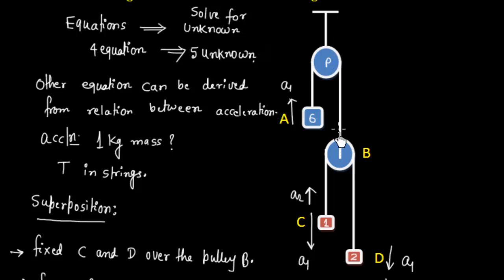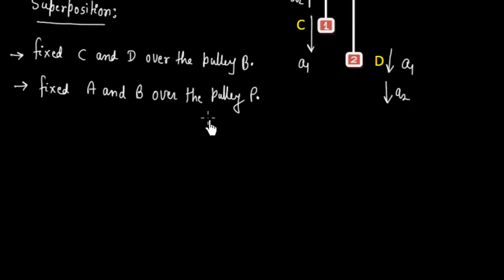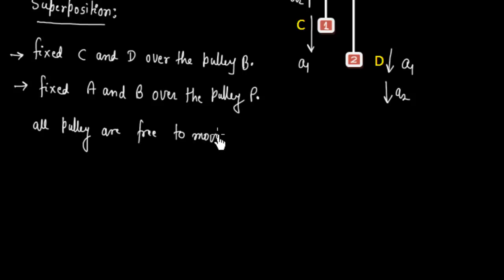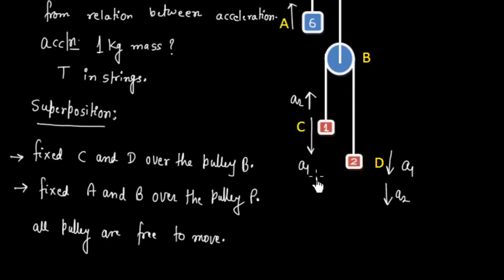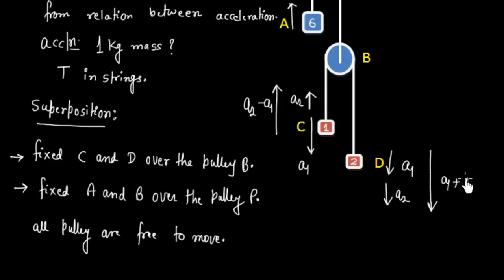Now open the constraints — neither A and B is fixed nor C and D is fixed, so all pulleys are free to move. Applying superposition: particle C will have acceleration A1 downward and A2 upward, giving a resultant acceleration of A2 minus A1 in the upward direction. Particle D will have a resultant acceleration of A1 plus A2 in the downward direction.